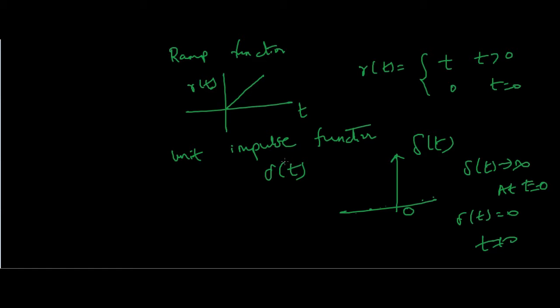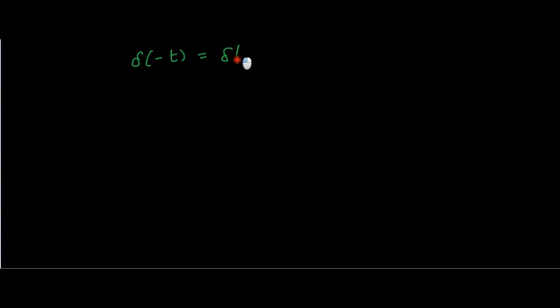We will see some examples and some properties too, which will help us to solve any complicated problem — and if you are writing any competitive exam they will ask you examples based on these. Here are some properties of the delta function: δ(−t) is equal to δ(t). Also, if you integrate the delta function over all of infinity, the value is 1.